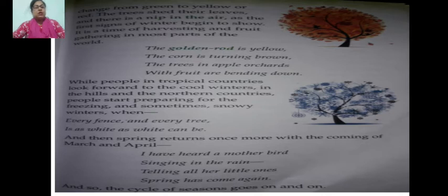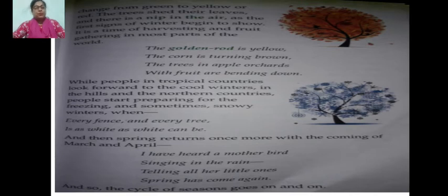While in the hills and northern countries, people start preparing for the freezing and sometimes snowy winters. Every fence and every tree is as white as white can be — white due to the snow. Then spring returns once more with the coming of March and April. A mother bird is heard singing in the rain, telling all her little ones spring has come again. And so the cycle of seasons goes on and on.